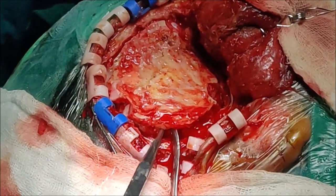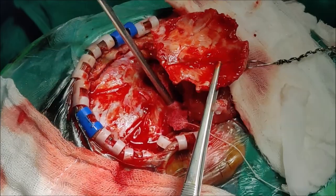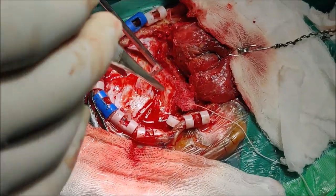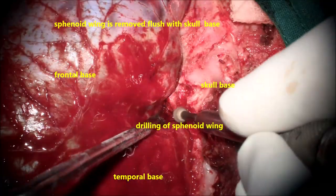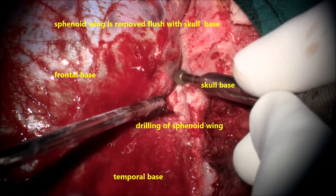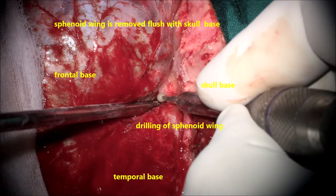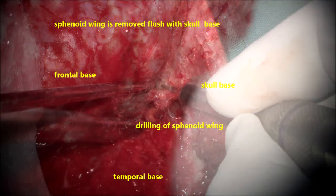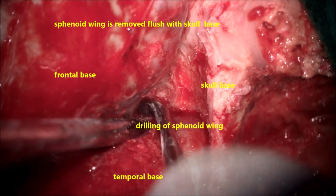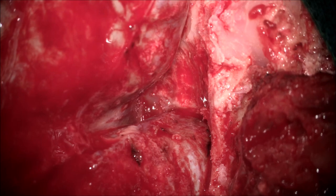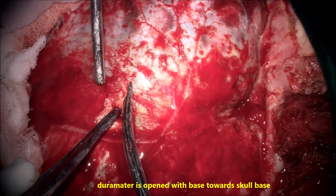The free bone flap is elevated. The dura is separated from the bone to avoid injury to the brain and avoid dural tear. The bone is taken out down to the skull base completely. The next important step is to decompress and drill the sphenoid wing completely flush with the anterior skull base. This is very important because drilling the sphenoid wing as flush as possible with the skull base reduces the need for brain retraction and avoids undue retraction of the frontal and temporal lobes.